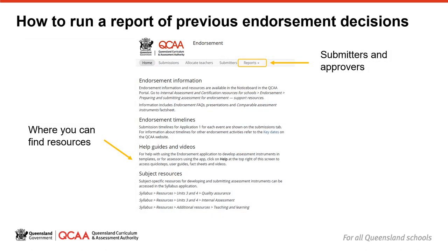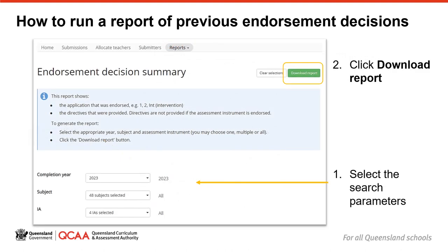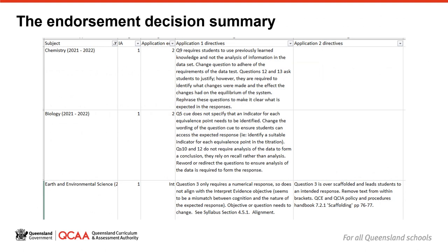In the application, you can see the directives for each assessment instrument by opening the assessment instrument. It is also possible to run a report that collects all previous endorsement decisions and directives for one or more subjects and for one or more assessment techniques. Submitters and approvers have access to run an endorsement decision report by clicking on the reports option. The submitter or approver can select all relevant subjects, completion years and assessment instruments to create a downloadable tailored report. The report identifies whether the assessment instrument was endorsed first, second or intervention, and the directives provided if it was not endorsed. These directives can help you plan so that you don't replicate the same issues in your new assessment.